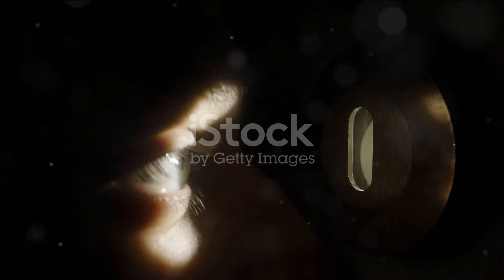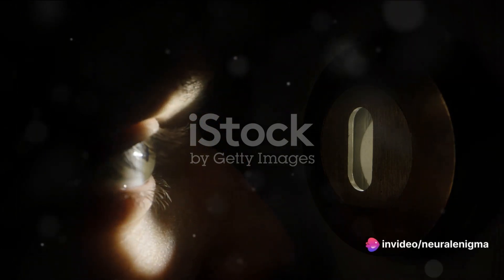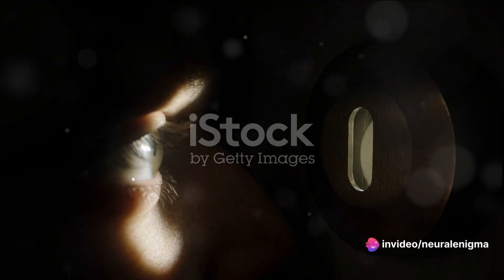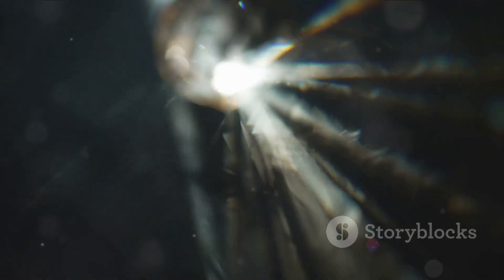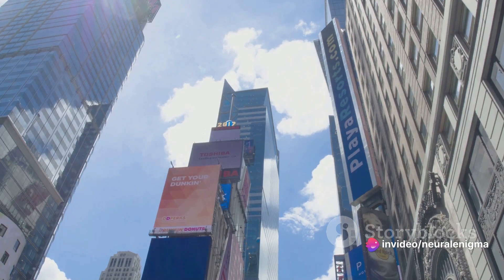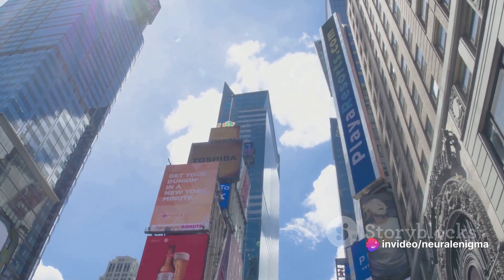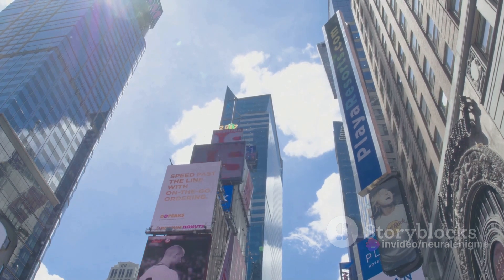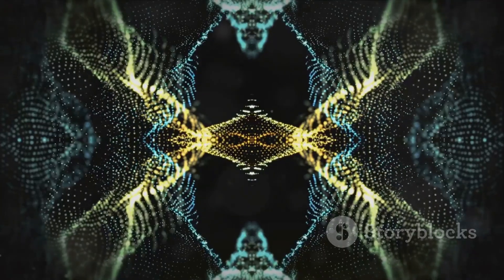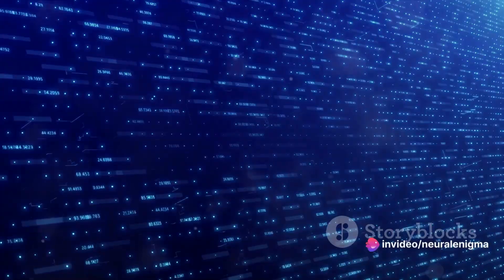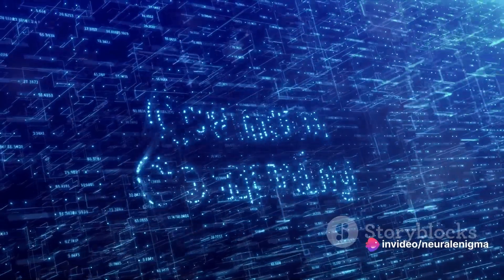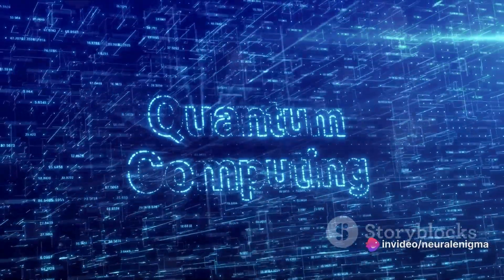And here's the kicker: if we try to peek to determine which slit the particle actually passes through, the interference pattern disappears. Instead we see two bright spots on the detector screen, just as we'd expect if the particles were behaving like particles. This is the heart of the double slit experiment, a demonstration of the strange and counterintuitive world of quantum mechanics. It shows us that particles can behave like waves when we're not looking and like particles when we are, and it suggests that reality at the quantum level is far different from the reality we're accustomed to in our everyday lives.